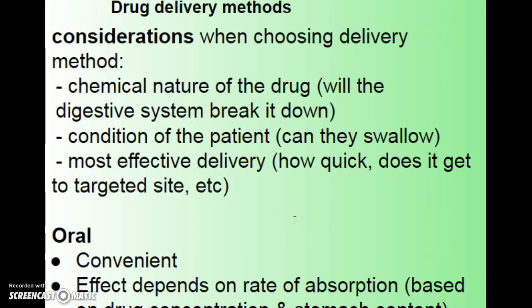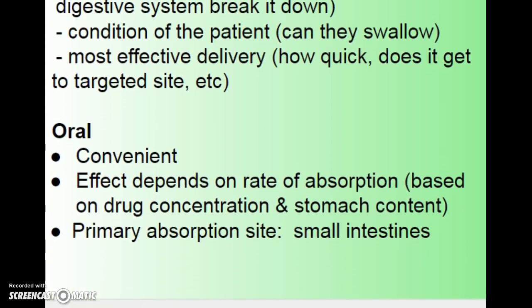The choice of delivery method depends on a few things: the nature of the drug — will it break down in the digestive system before reaching its target? — the condition of the patient — can they swallow? Rectal medications are generally used for the very ill or very young. The last consideration is the most effective delivery system — how quickly does it need to reach its targeted site? Oral is very convenient, though absorption rate depends on drug concentration and stomach contents; the primary absorption site is the small intestine.